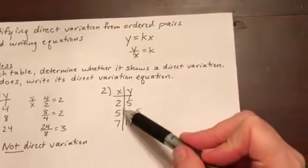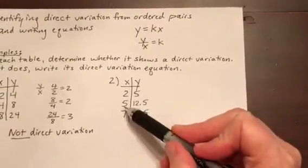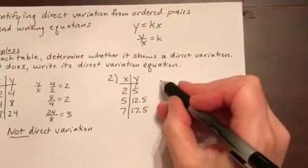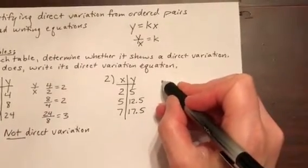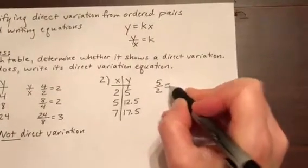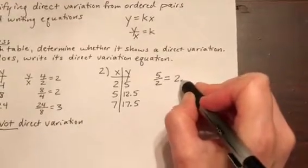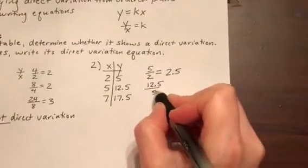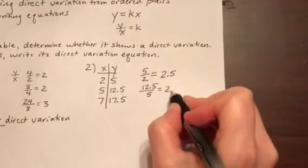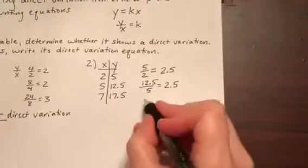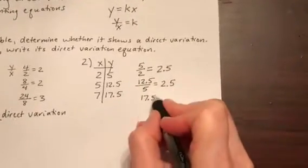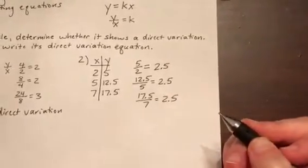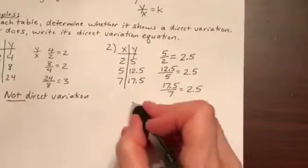Let's look at our second table. We have 2, 5, 5, 12.5, and 7, 17.5. So let's look at the ratio of y to x in each of these pairs. 5 over 2 is the same as 2.5 when we divide it. 12.5 over 5 is also 2.5 when we divide it. And so this table is an example of direct variation.